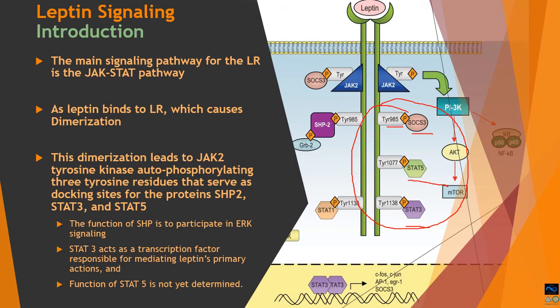These phosphorylated tyrosines cause activation of downstream proteins, specifically ERK, SOCS3, SHP2 (also called GRB2), and STATs — STAT5 and STAT3. The SHP2/GRB2 domain participates in ERK signaling. STAT3 acts directly as a transcriptional factor to mediate the primary response to leptin by driving expression of specific genes. STAT5 function is mediated through diffuse signaling not yet fully determined. These are the key downstream effectors of leptin via the JAK-STAT pathway.